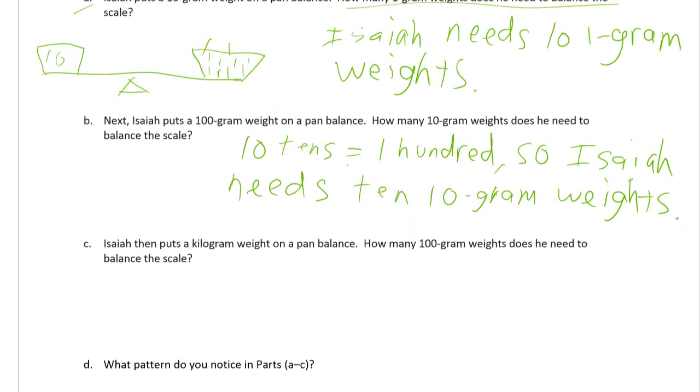Isaiah then puts a kilogram weight on a pan balance. How many 100 gram weights does he need to balance the scale? So we can do the same thing, similar thing here, that it takes 10 hundreds equals 1,000. So he needs 10, 100 gram weights.